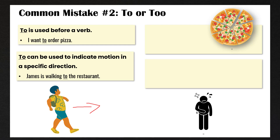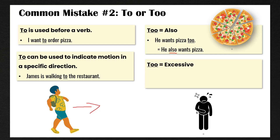Now, too with double O has different meanings. Too can mean 'also' — he wants pizza too — this means he also wants pizza. Too with double O can also mean an excessive amount or in excess. For example, he ate too much pizza, meaning he ate more pizza than he should have.